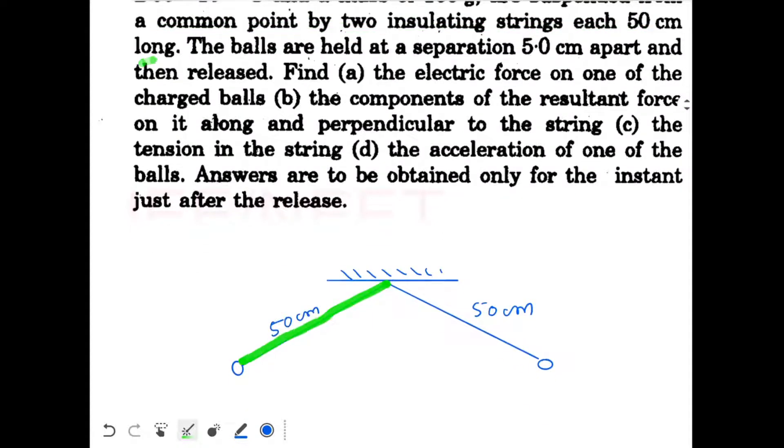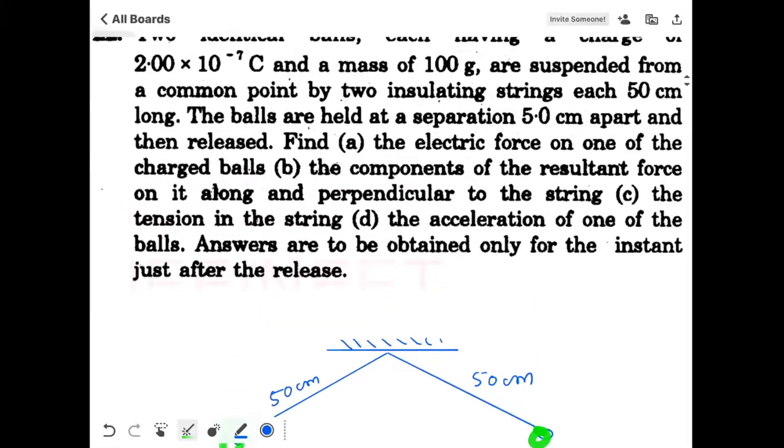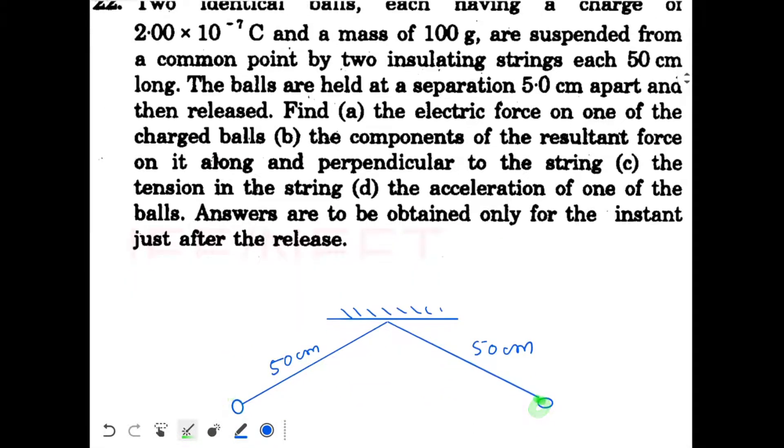So here you can see this is your first string and this is your first charge. Second string and second charge, both the strings are 50 cm long. The mass and charge for the two spheres are given. Charge is 2 x 10^-7 coulomb, mass is 100 gram.